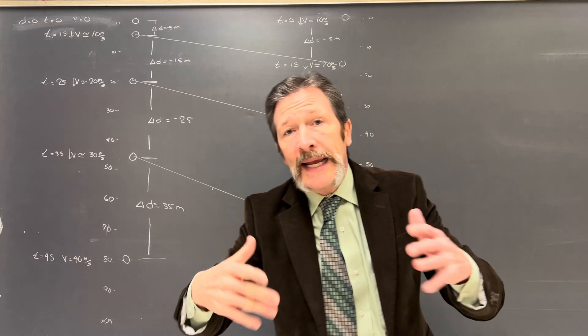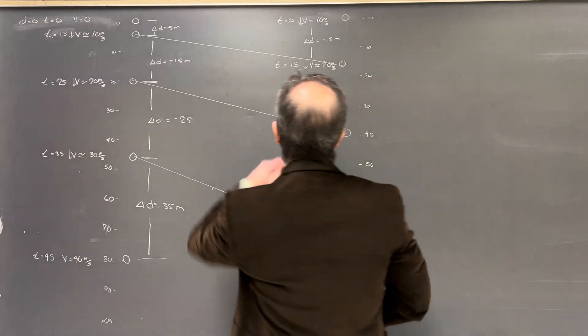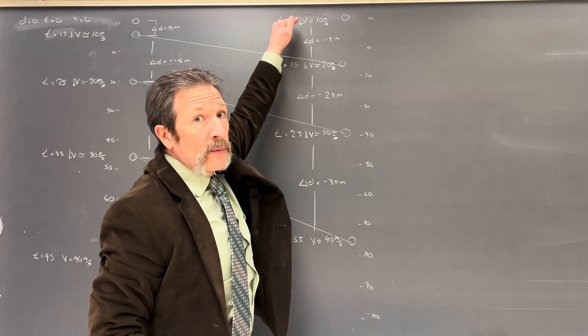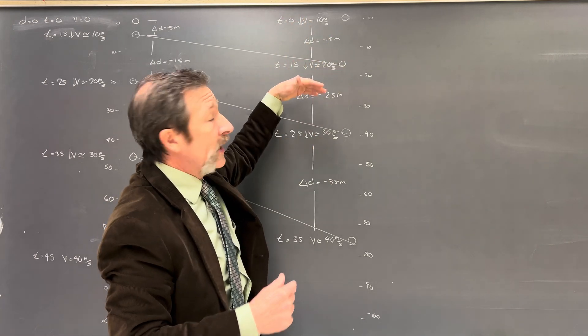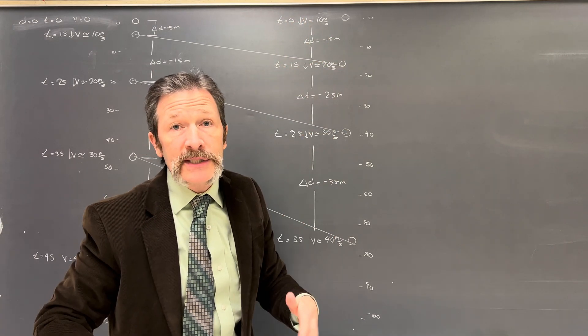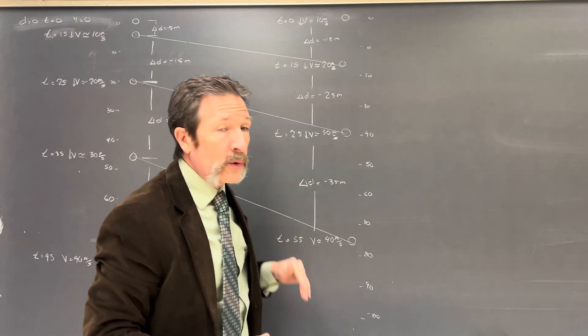Every second we gain roughly 10 meters per second. On this particular case we are starting with that 10 going down and it's going to end up picking up its speed every second by about another 10, 20, 30, 40.